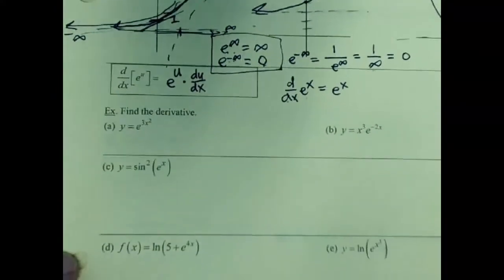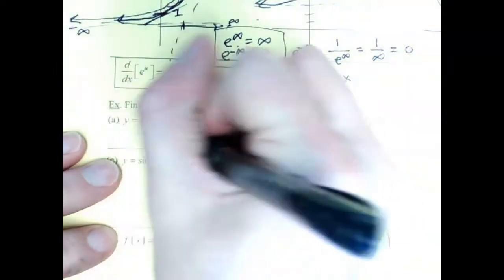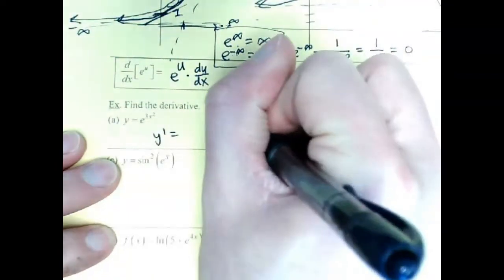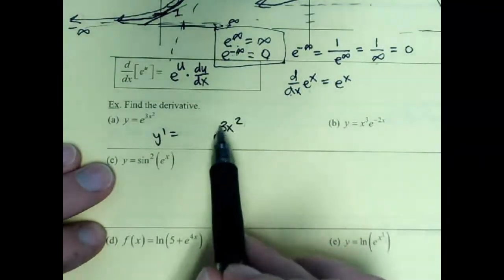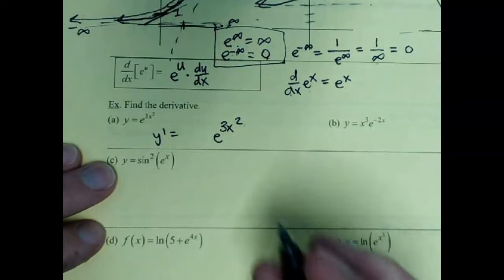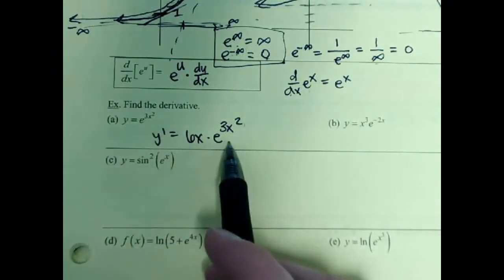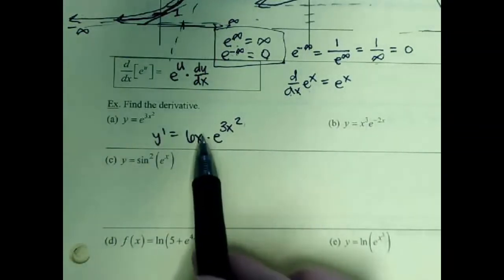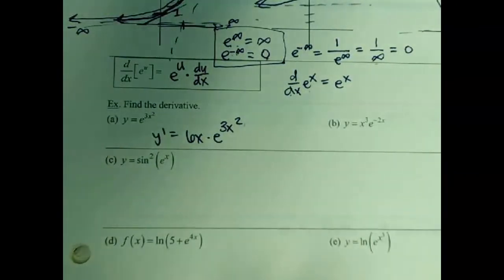Let's practice. We've got e to the 3x squared. The derivative is going to have that exact same e to the 3x squared — just copy it. Then think: what's the derivative of the piece in the exponent? The derivative of 3x squared is 6x, so 6x kicks down because of the chain rule. That's it. The derivative of an exponential: copy it, then worry about what kicks down to the front because of chain rule. I like to write the chain rule part in front.